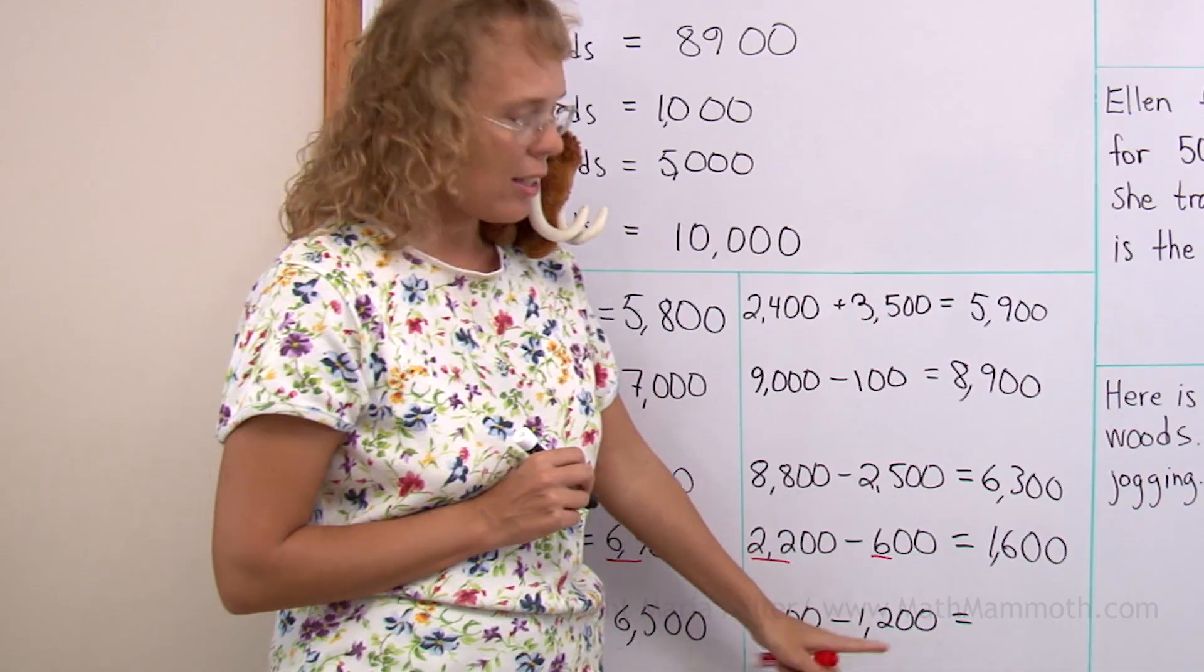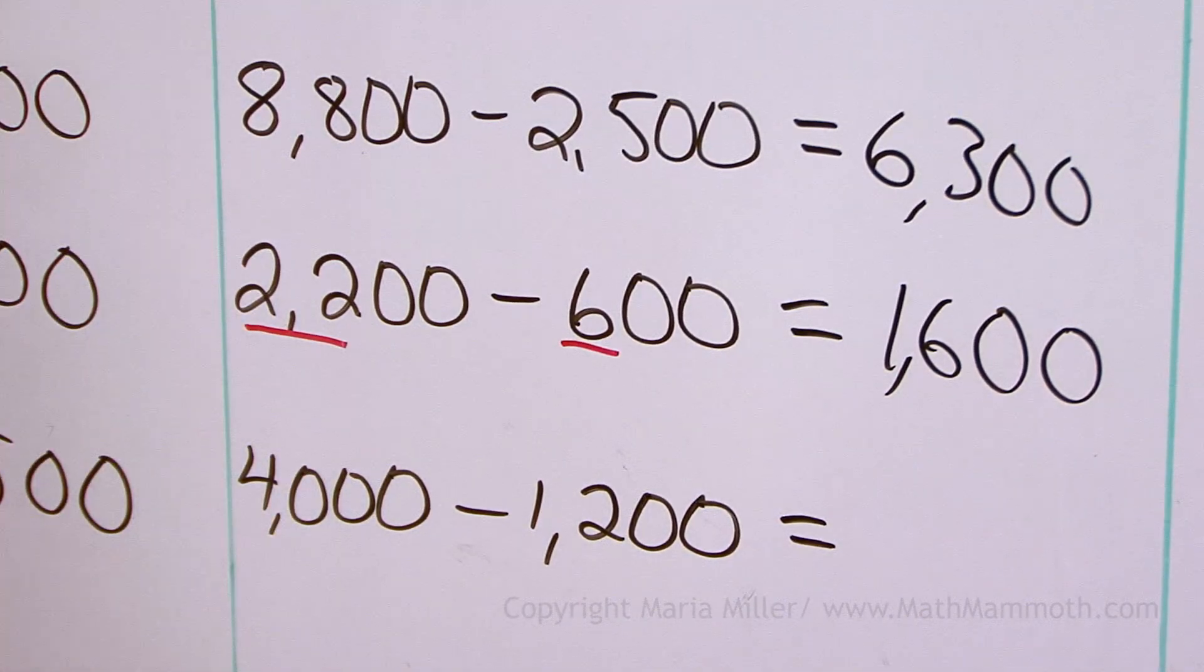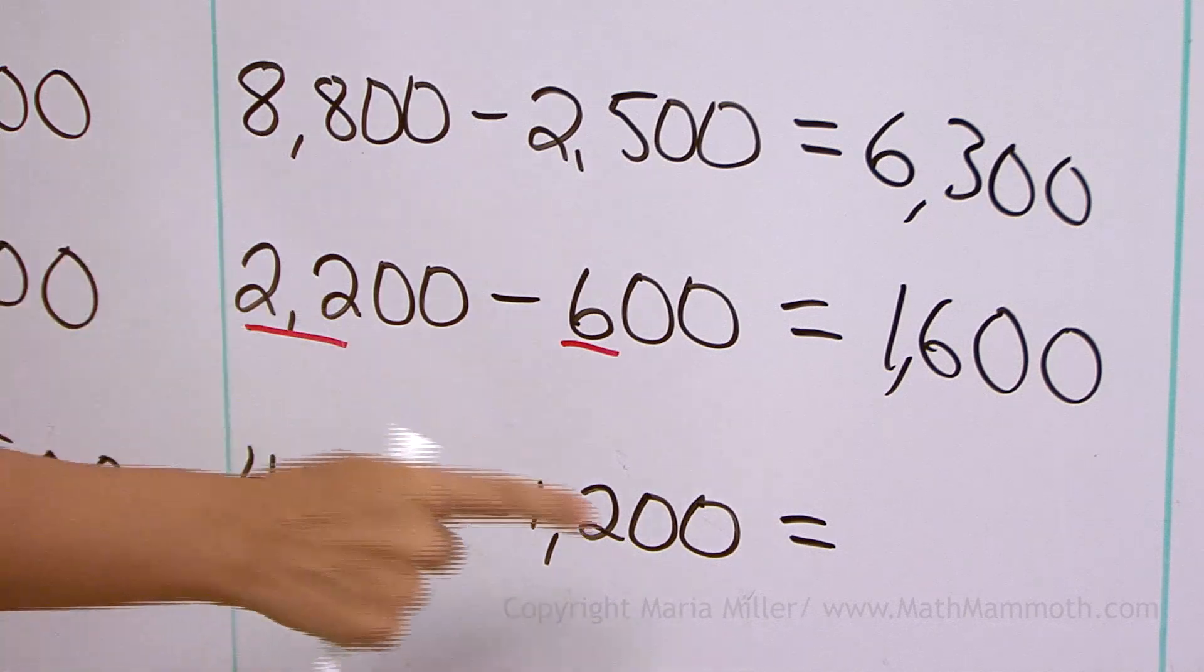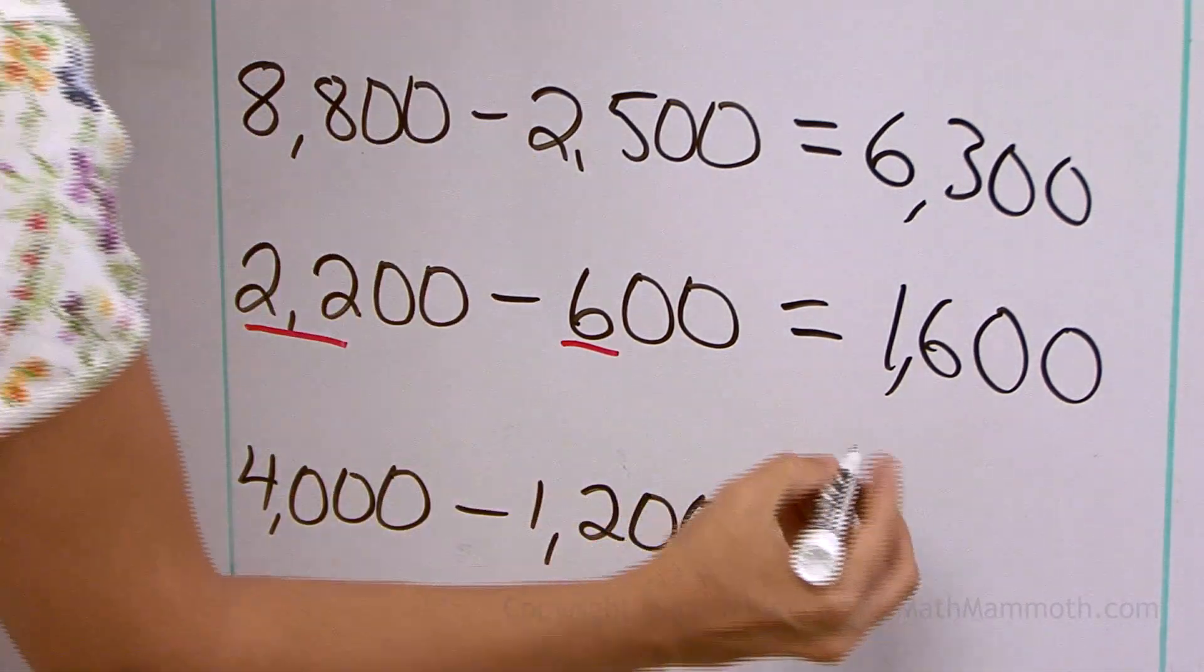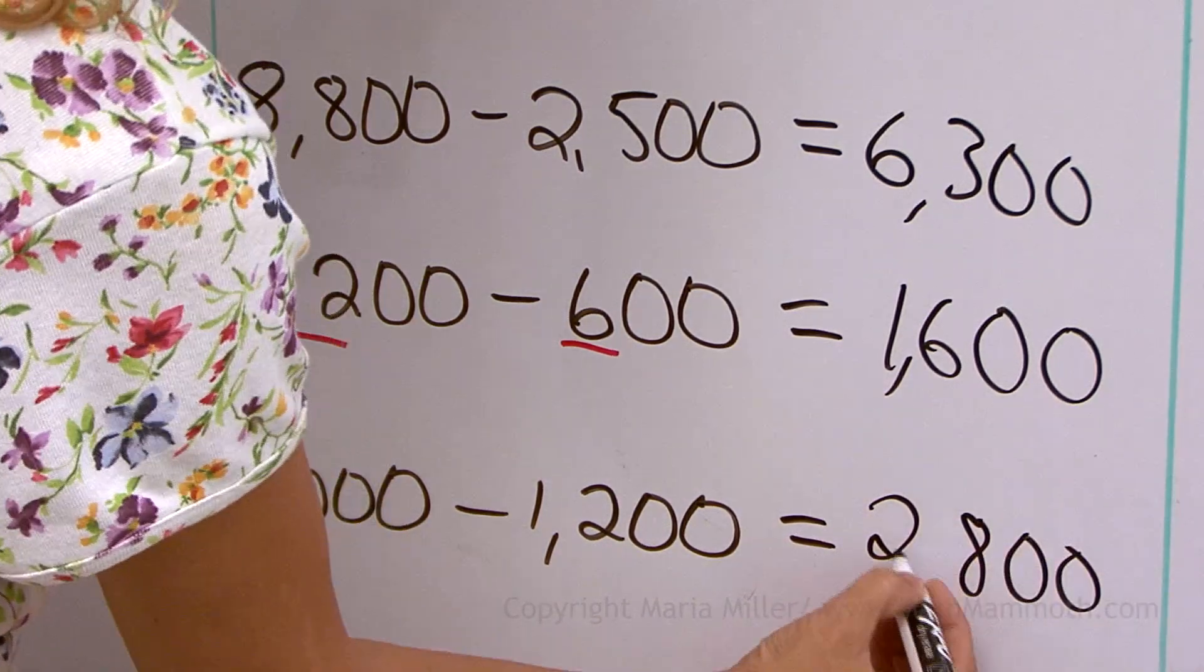4000 minus 1200. 4000 minus 1000 would be 3000. And then take away 200. 3000 minus 200. So we get 2800.